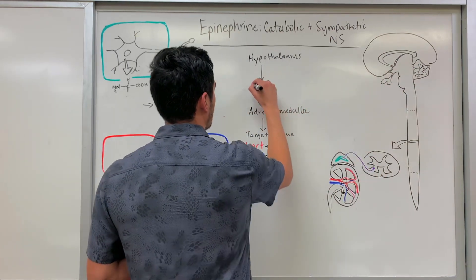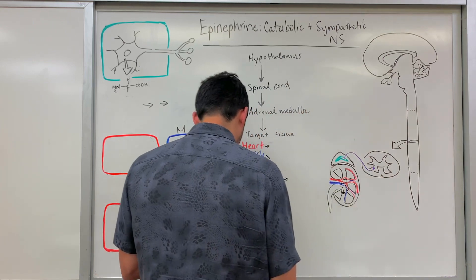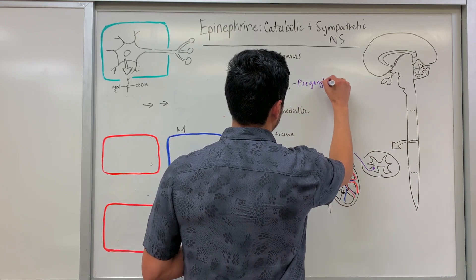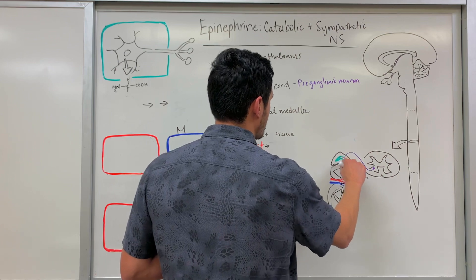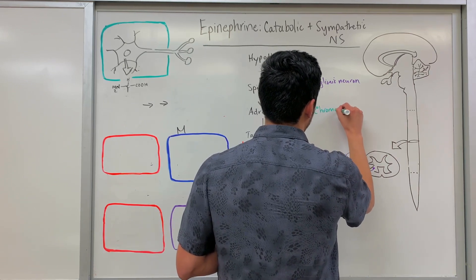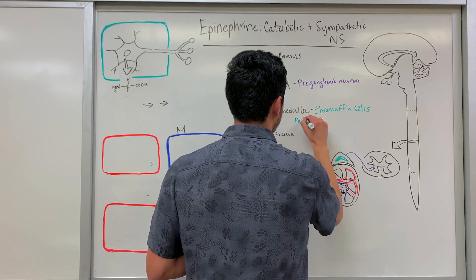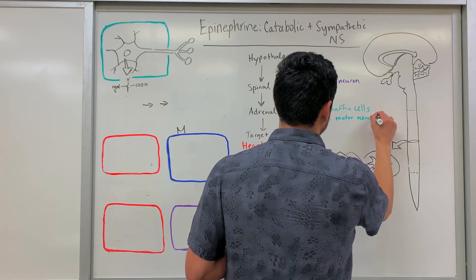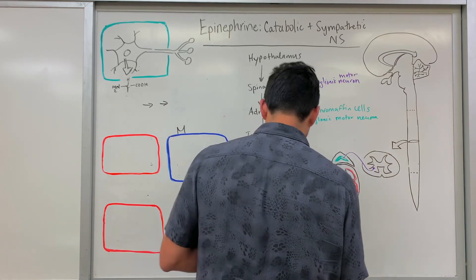Looking at a cross section of the spinal cord, this is the location of our pre-ganglionic neuron. The pre-ganglionic neuron will synapse within the adrenal medulla. Within the adrenal medulla we have what are known as chromaffin cells, and within these chromaffin cells we have our post-ganglionic motor neuron.